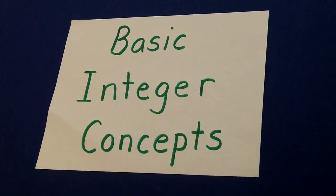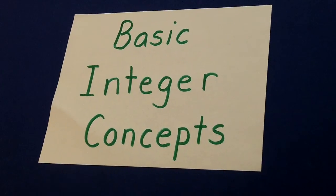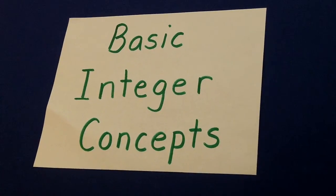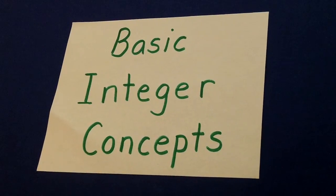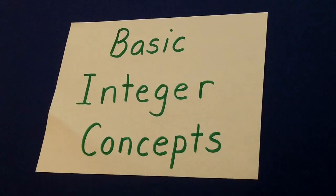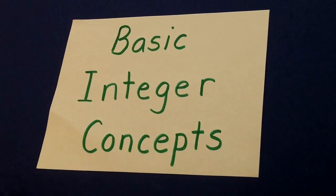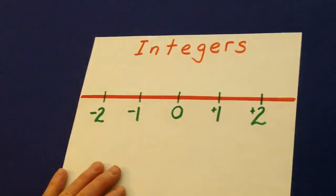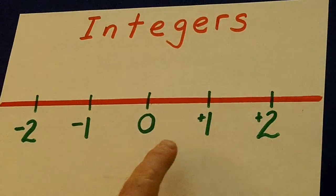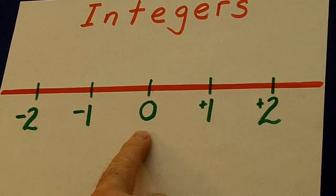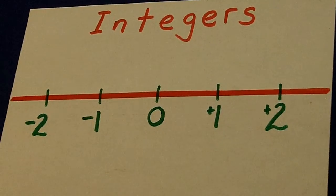This lesson is going to focus on our basic integer concepts and the ideas that teachers need to explain to students when we first start integers. First of all, let's think about what integers are. Integers are the positive and the negative numbers on each side of zero. That's what integers are.